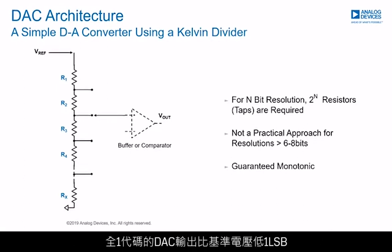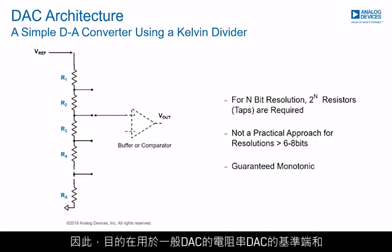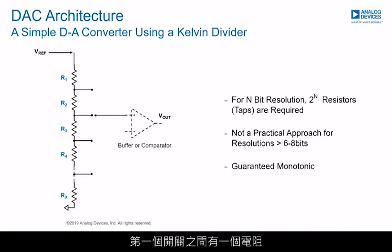The output of a DAC for an all-ones code is 1 LSB below the reference. So a string DAC intended for use as a general-purpose DAC has a resistor between the reference terminal and the first switch. This is also the architecture used in digital potentiometers.